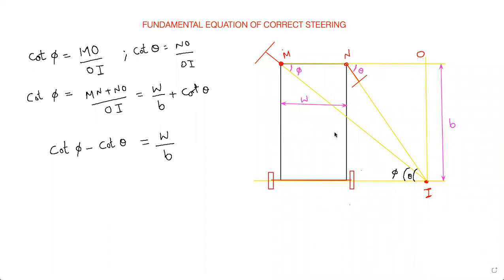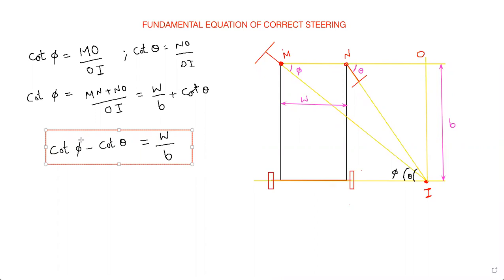This is the condition of correct steering. If any steering mechanism follows this equation, it is said to be a correct steering gear mechanism. To remember: phi is the outer wheel turning angle, theta is the inner wheel turning angle, W is the track width, and B is the wheelbase. Given theta, W, and B, you can find out phi. Thank you.